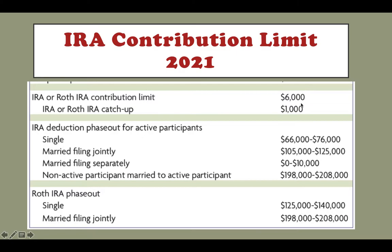This is the annual amount. If you are older than 50 years old, you are allowed an additional $1,000 catch-up contribution, so the total is $7,000 in 2021.